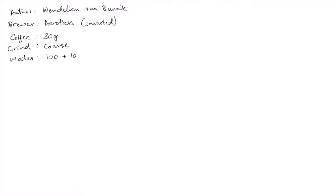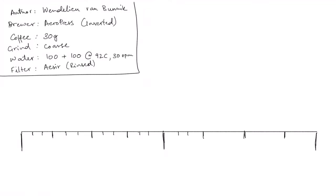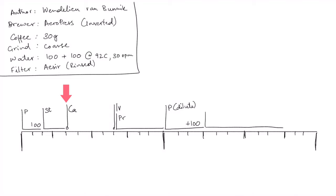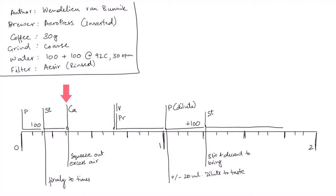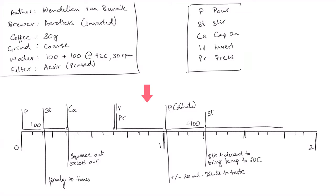Back to the doodling. I'm going to quickly sketch out the World AeroPress Championship winning recipe from 2019. In the details section you can see that the author Wendelin has used 30 grams of coarsely ground coffee for an inverted AeroPress method. The water says 100 plus 100, which will make sense in a second. She's used a special type of filter paper by a company called Acer. The recipe starts by adding 100 grams of water to the ground coffee in about 10 seconds, followed by 20 firm stirs. CA at 20 seconds indicates cap on, and there's a note to remove the excess air by pushing the body of the AeroPress down onto the plunger until the hissing sound stops. Then at 40 seconds we invert the AeroPress and press for 20 seconds. We then tare the scales as indicated by the plus sign and dilute the brew with 100 grams of water. Lastly, we stir and decant to bring it down to 60 degrees before serving.